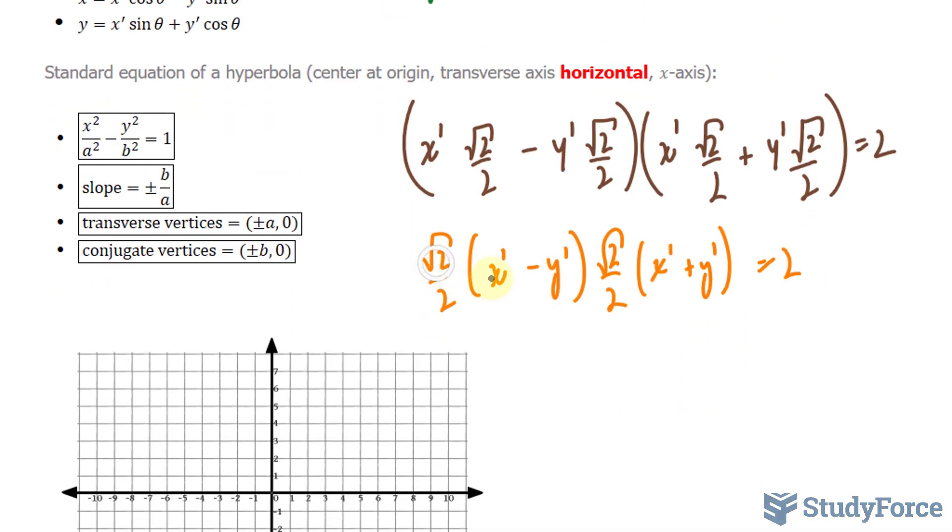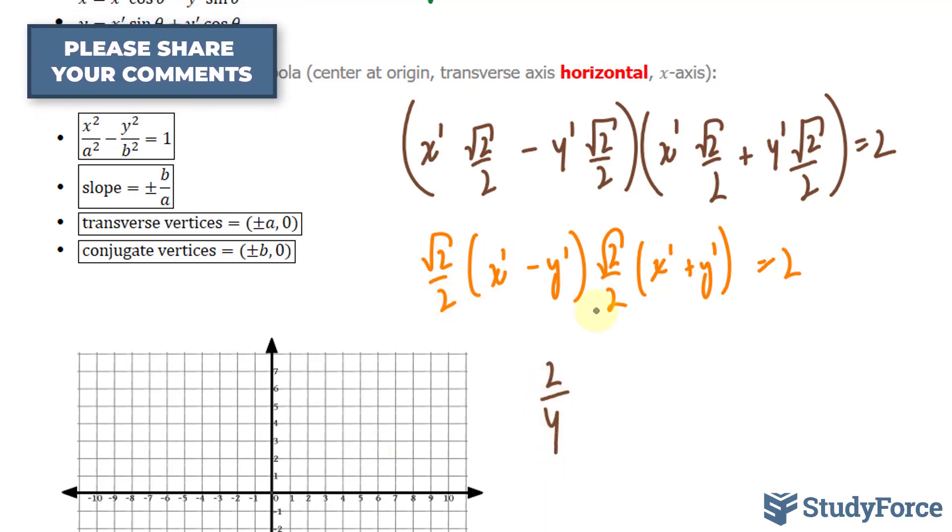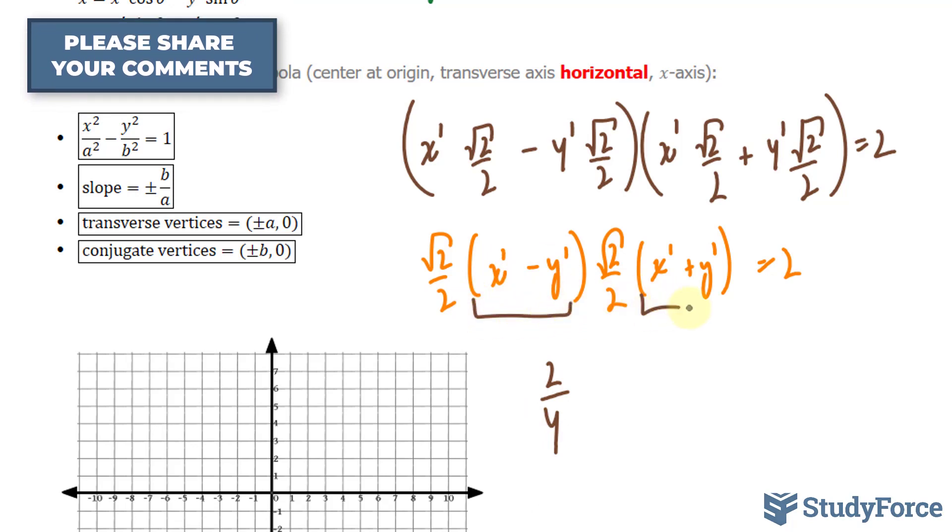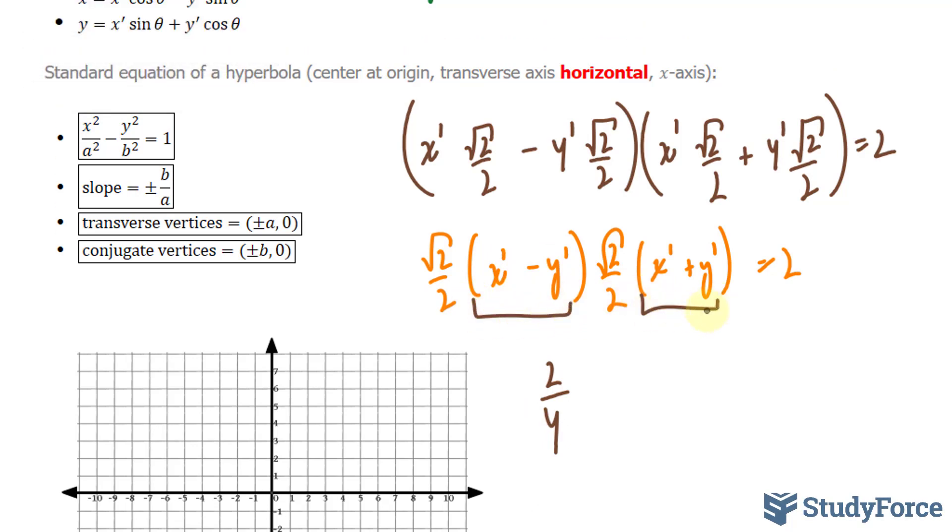And if I group together this factor and this factor, I'll end up with √2 · √2, that's equal to 2 over 4. 2 times 2 is 4. And this factor and this factor, if you take a close look at them, that is a difference of squares.